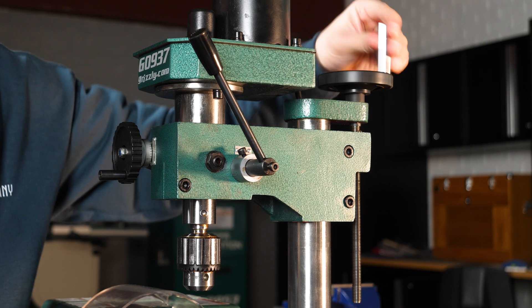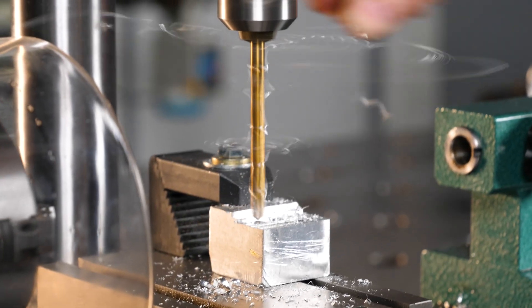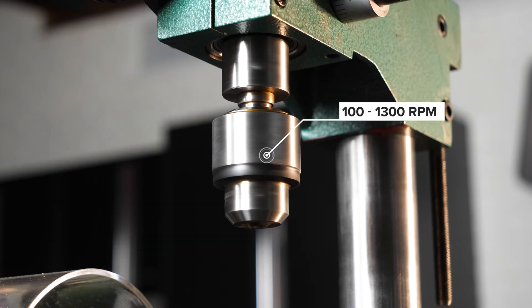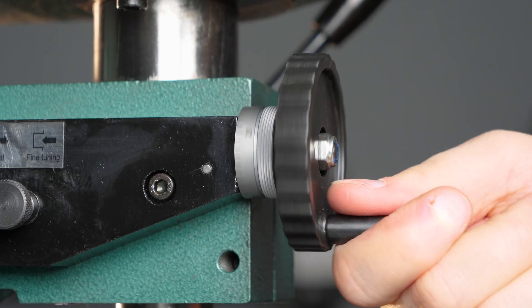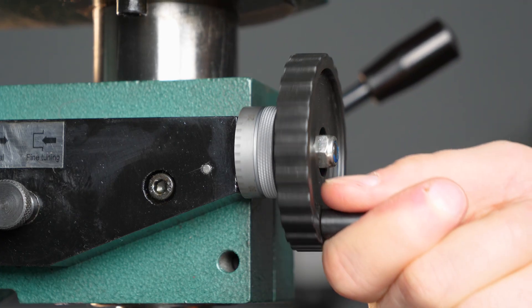The mill has an adjustable head, making it accurate and repeatable with variable speeds from 100 to 1300 RPM. The mill also features a push-pull fine-feed clutch with a handwheel that is engineered for precision.